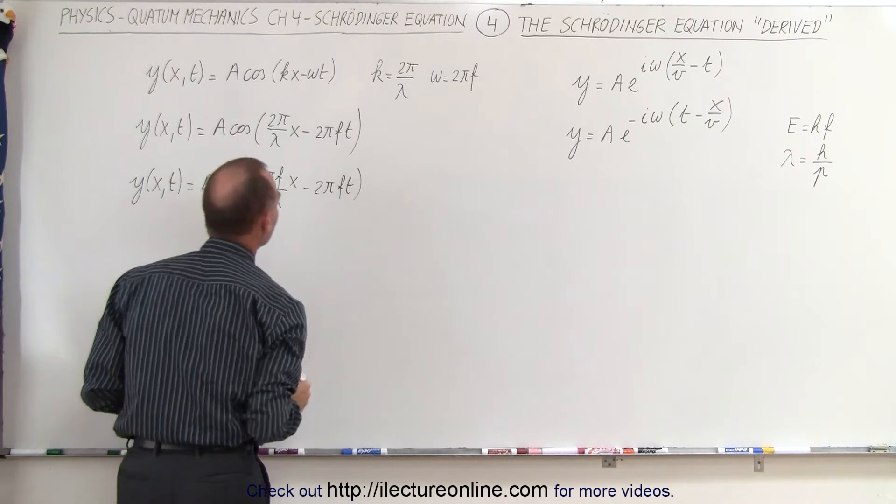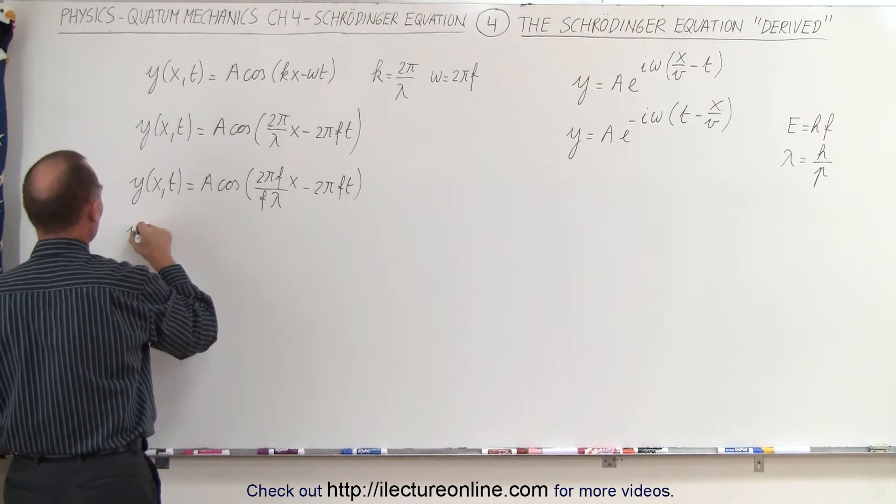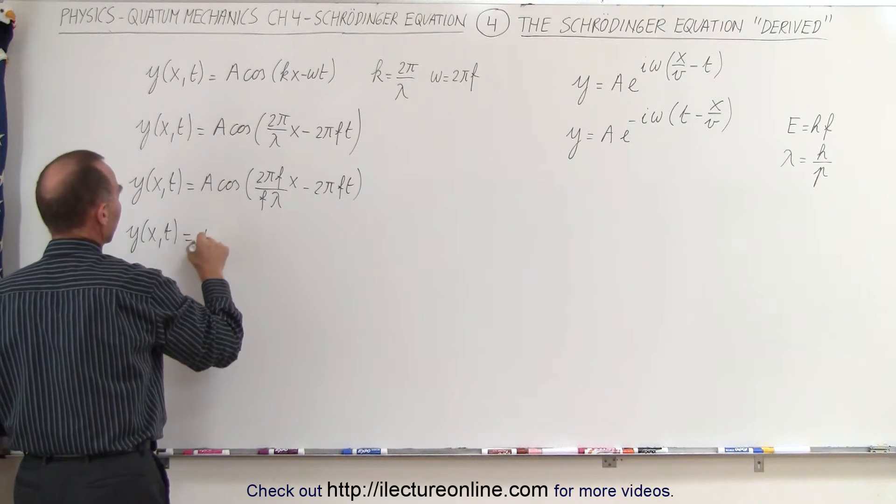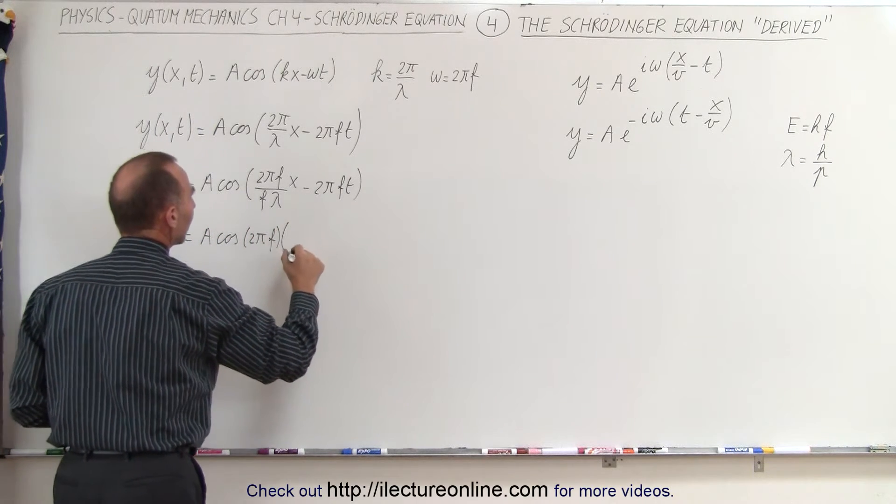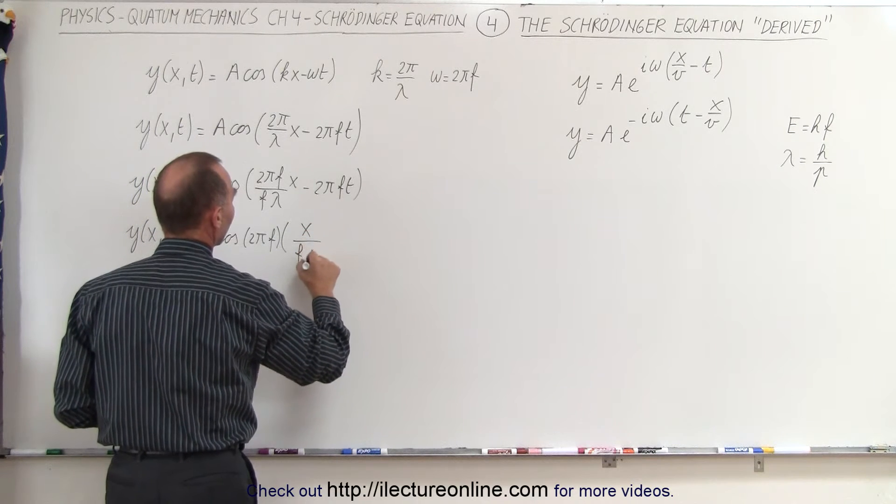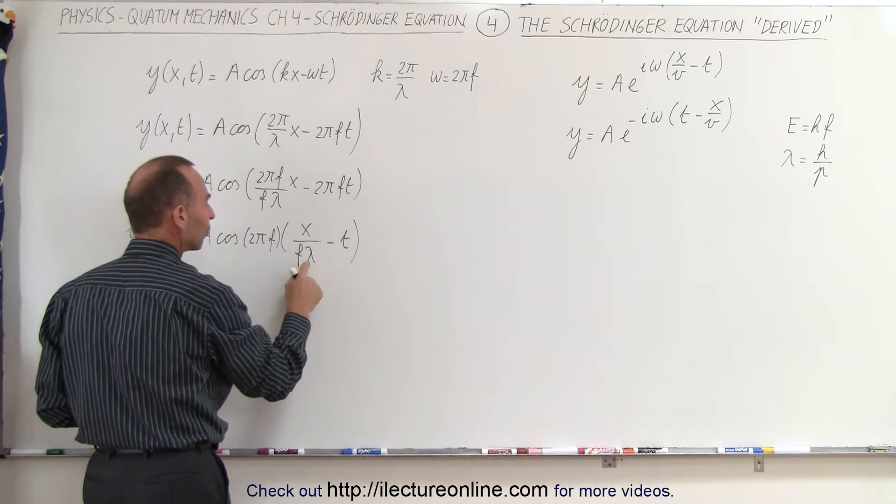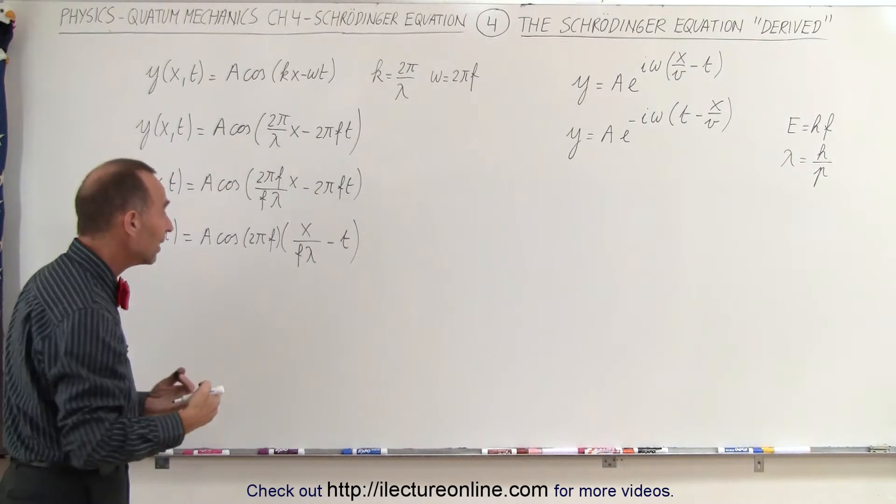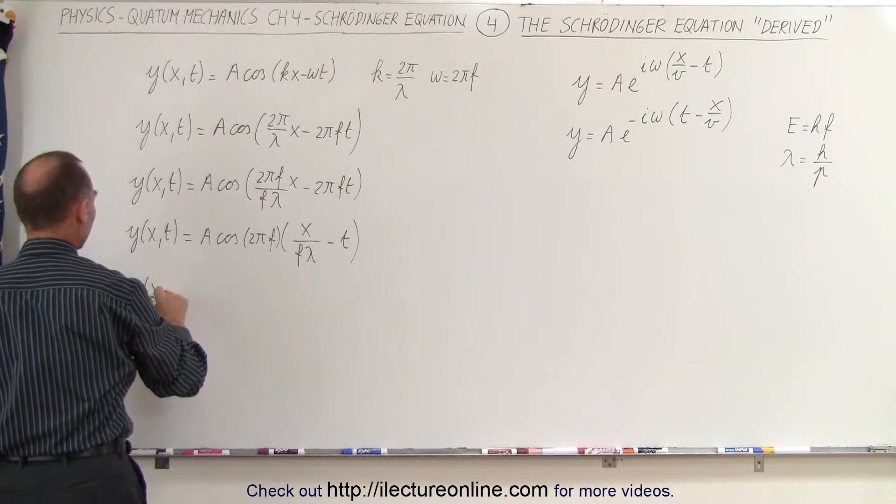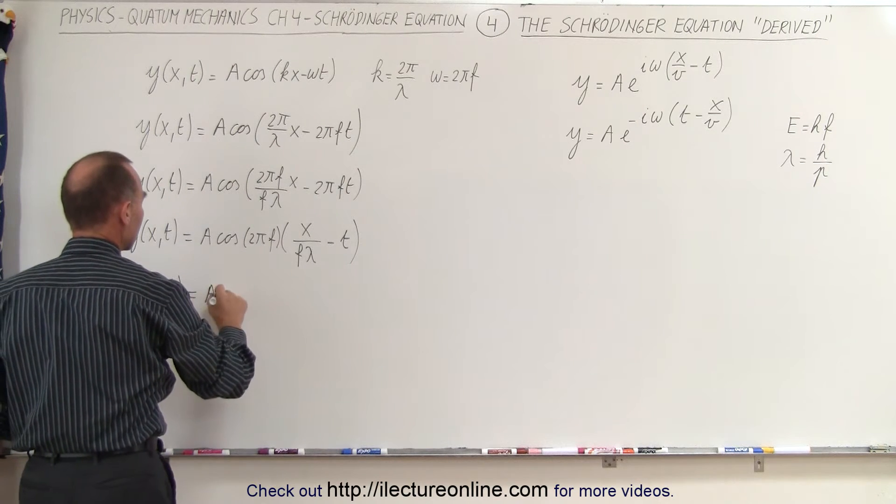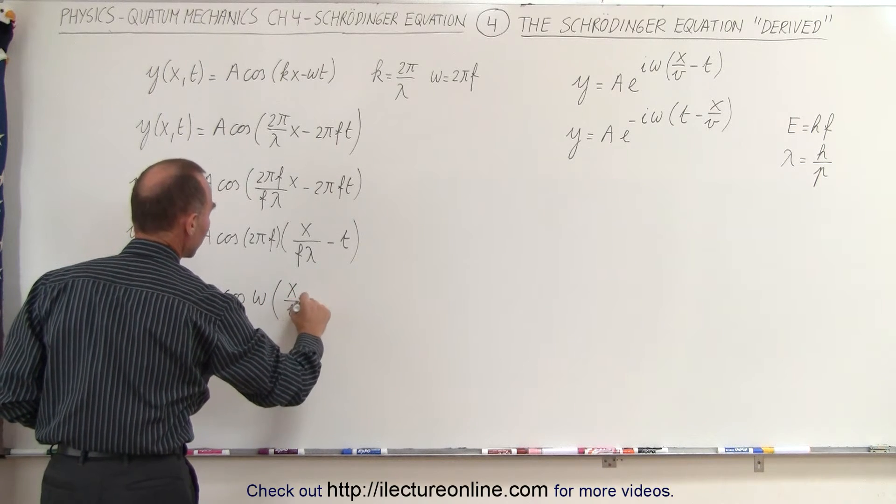Next I realize that y of x and t equals A times the cosine of 2πf times x over fλ minus t. And then I realize that for waves the frequency times the wavelength is equal to the velocity, and 2πf is equal to omega. I can then write this as y as a function of x and t equals A times the cosine of omega times x over v minus t.